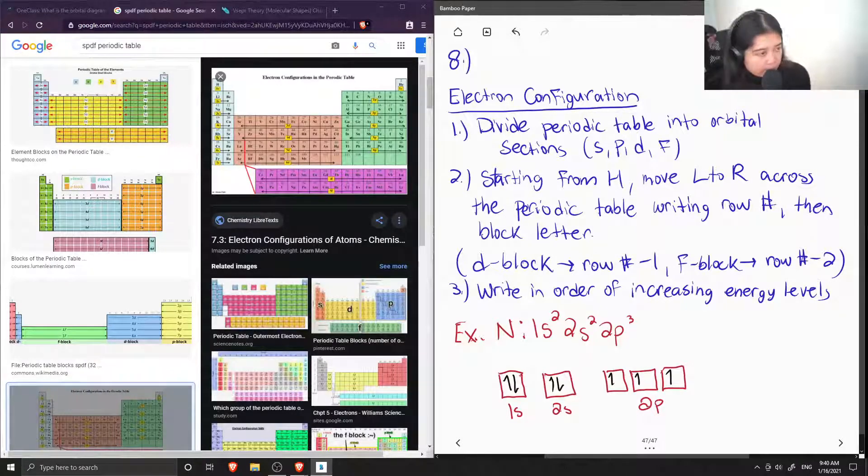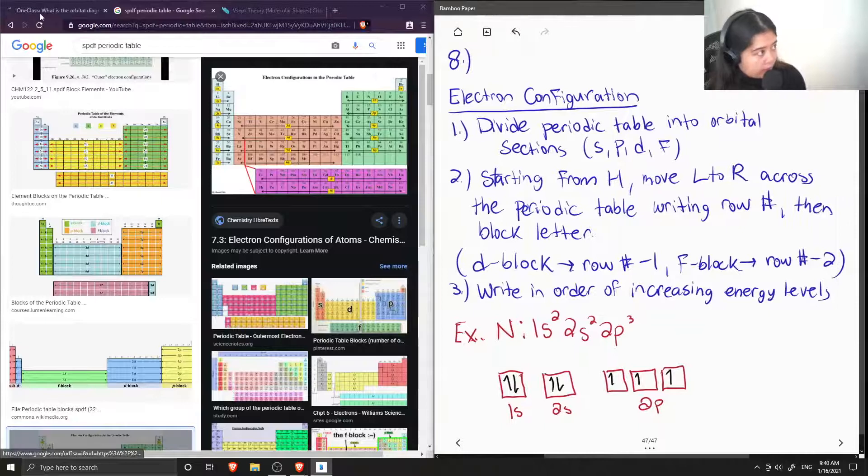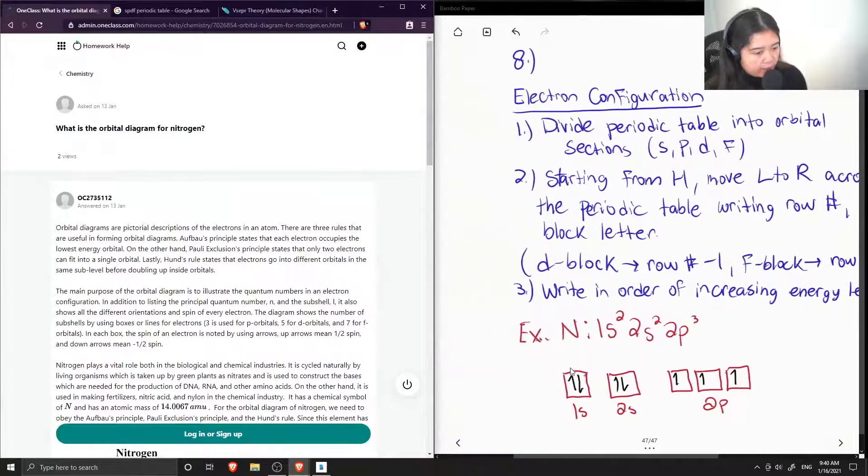Okay, so this is the orbital filling diagram for nitrogen. And there are 3, yep, these 3 electrons that are spinning up.